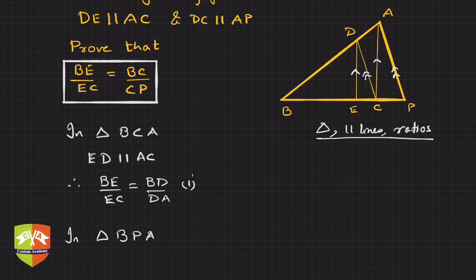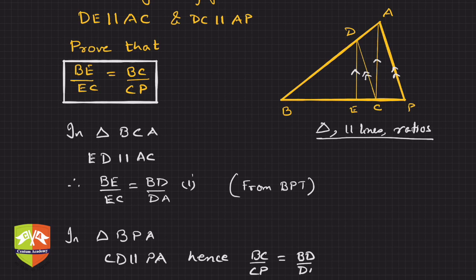So you can write here from Basic Proportionality Theorem, okay, by same logic in BPA, you can write CD is parallel to PA. Hence, BC by CP is equal to BD by DA, again by BPT or from BPT, whichever way you want to write. Okay, now.